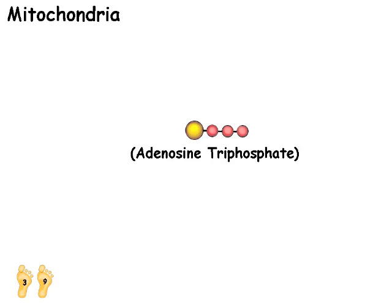Some cells have billions of ATP molecules. On average, the batteries are recharged three times a minute. Half of the volume of a heart muscle cell is taken up by the battery chargers.